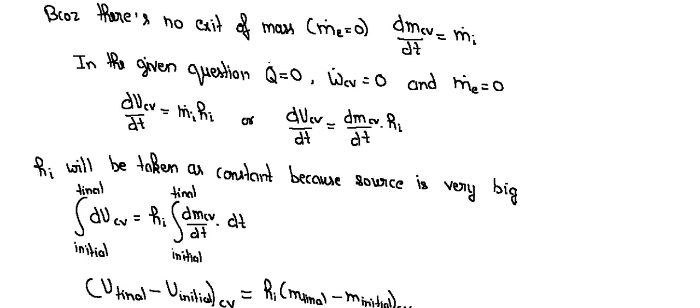We know that there is no exit of mass because it is closed, m dot e equals zero. It means dmcv/dt equals m dot in. In the given question, it is also said that it is insulated in nature, control volume is zero.